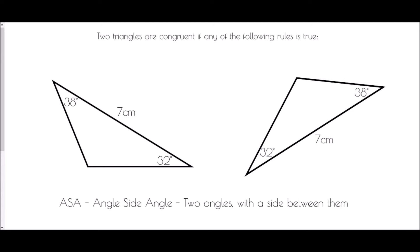When it comes to triangles, we have a few rules to prove congruence. The first is ASA — the Angle Side Angle rule — meaning two angles with a side between them must be the same in both triangles. Here we have a 32-degree angle and a 38-degree angle with a seven-centimeter side between them. Even though the other triangle is in a different orientation, it also has a 32-degree and 38-degree angle with a 7-centimeter side between them.